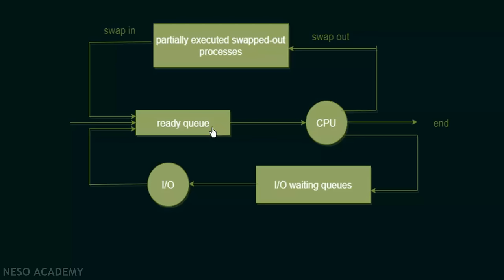Another thing that can happen is the process is assigned the CPU and is executing, but another process comes with higher priority and has to be executed first. The previously executing process gets swapped out and goes to a list called the partially executed swapped out processes. After that it gets swapped back into the ready queue again. Since execution has not completed fully, it still needs the CPU to complete its execution, so it waits for its turn and when the process scheduler assigns the CPU again, it will resume and eventually go to the terminated state.